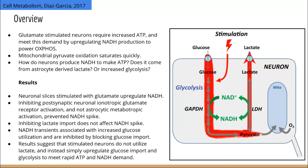Interestingly, when they inhibited action potentials by inhibiting neuronal ionotropic glutamate receptors but not astrocytic metabotropic receptors, they saw no NADH transient. In other words, NADH transients require neuronal activation and not astrocytic activation.